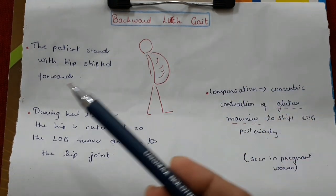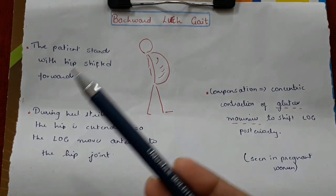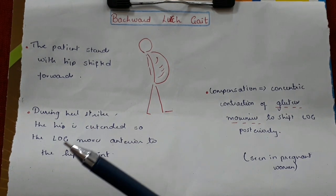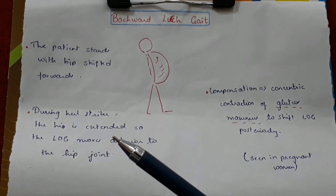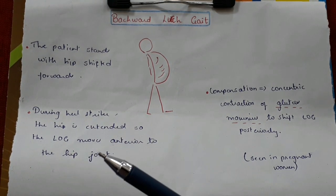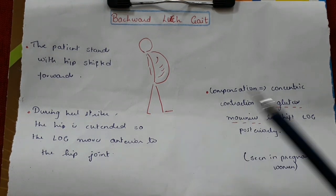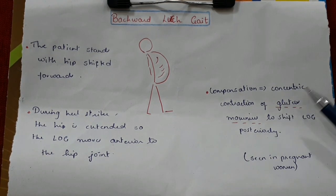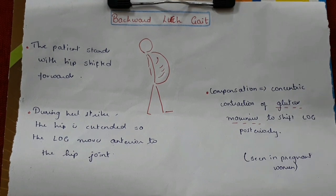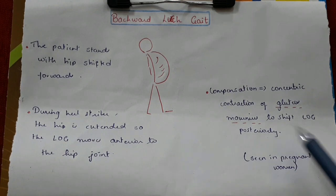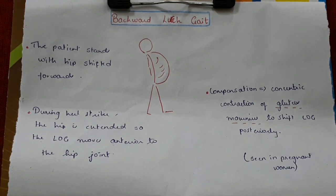In backward lurch gait, the patient stands with the hip shifted forwards. During heel strike, the hip is extended so that the line of gravity moves anterior to the hip joint. Compensation is by the concentric contraction of the gluteus maximus muscle to shift the line of gravity posteriorly. This type of gait is usually seen in pregnant women.